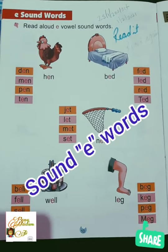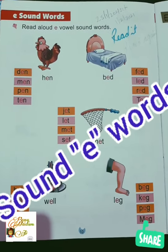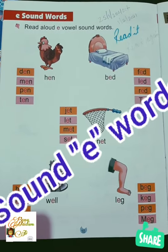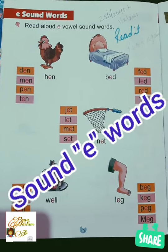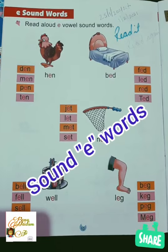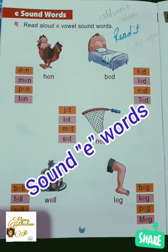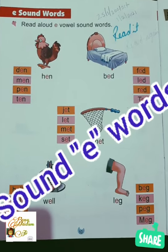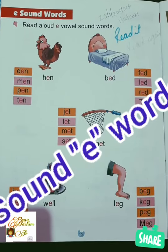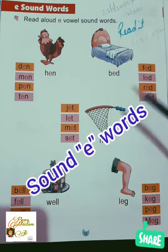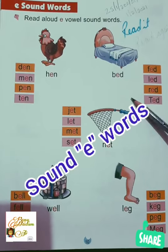First, tell me how many vowels? Five vowels. Name please: A, E, I, O, U. Clear?